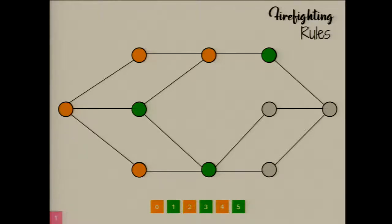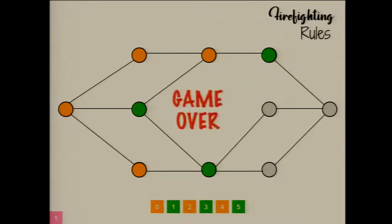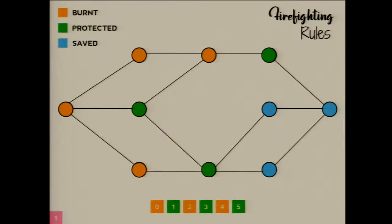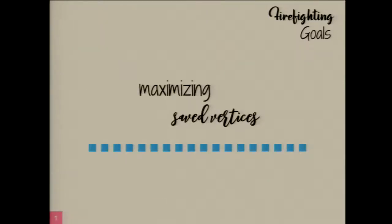There is no vertex that is adjacent to a burning vertex that's not burning or not already protected. So at this point the game is done. These remaining vertices are what we call saved vertices because they were not affected by the fire. The protected vertices are the ones with the firefighters and the rest are saved.